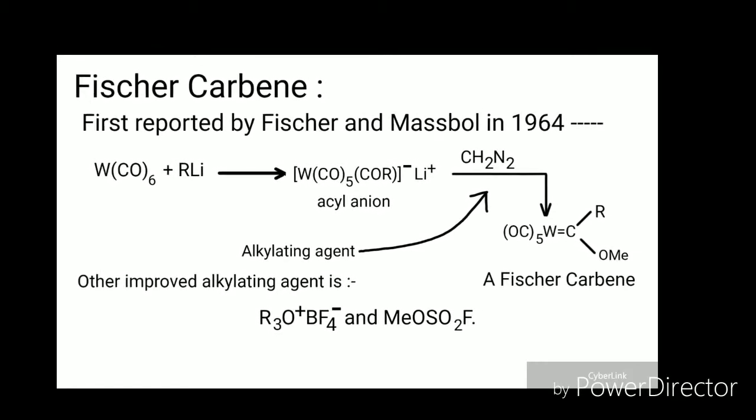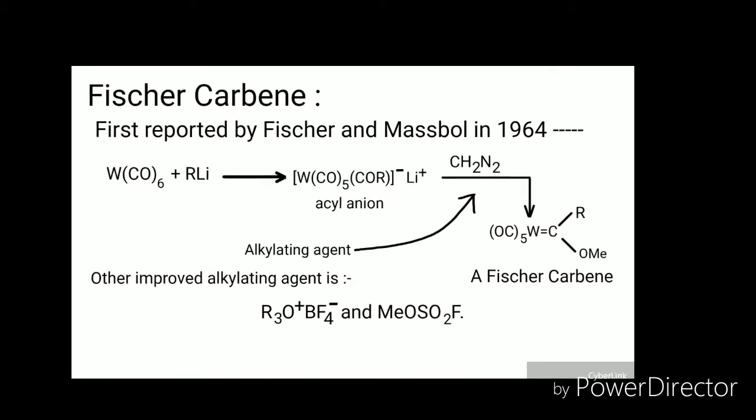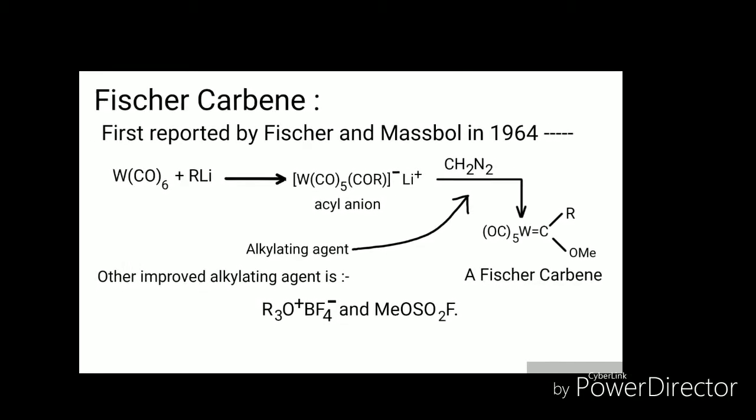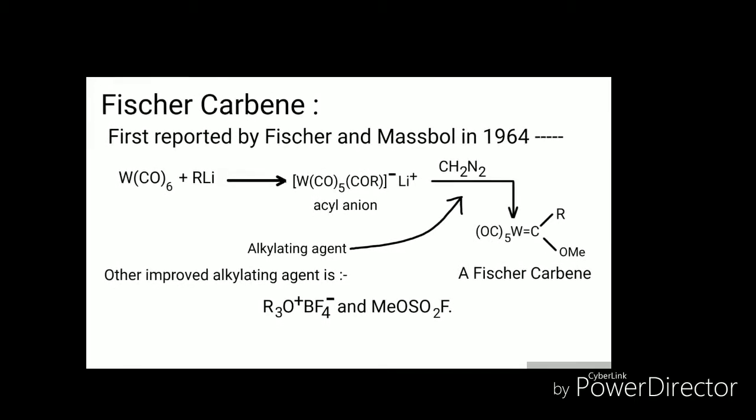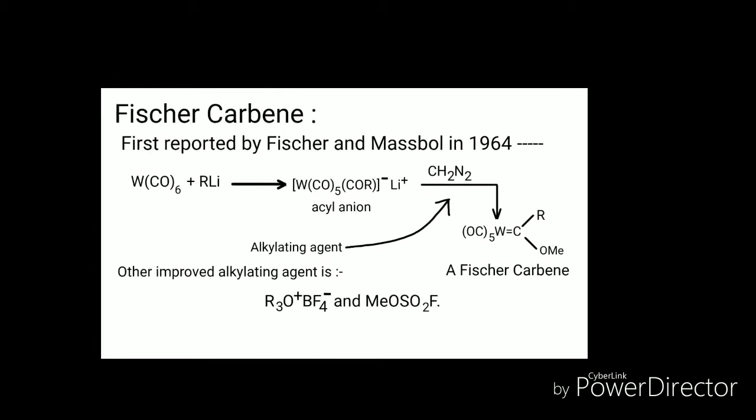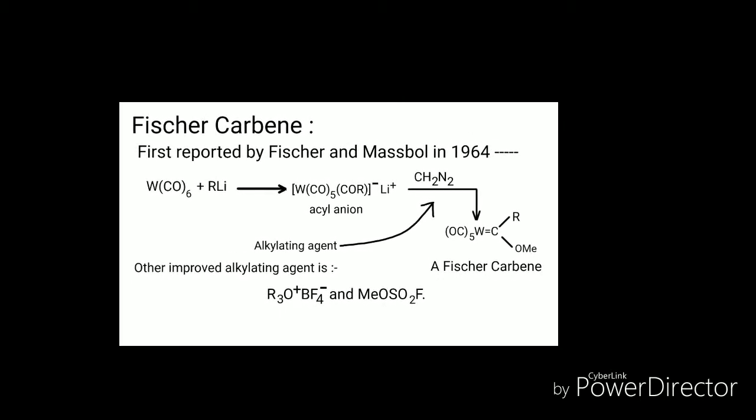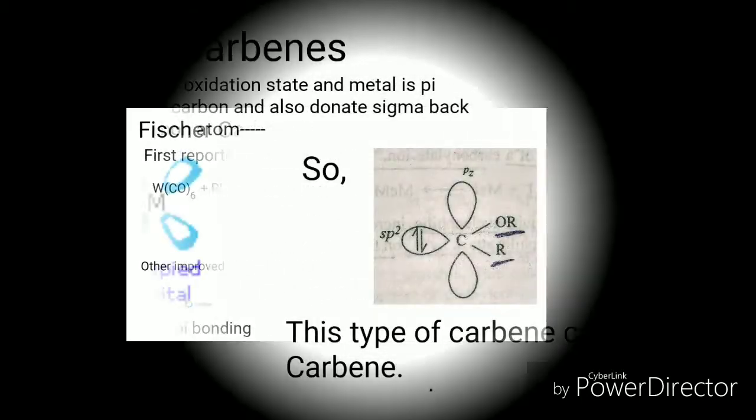Fischer carbene complex first reported in 1964 by Fischer. In the second step, CH2N2, that is diazomethane, is used as alkylidene agent. And now some other improved alkylidene agents are used, for example R3O+ BF4- or MeOSO2F.